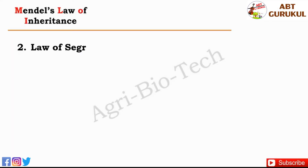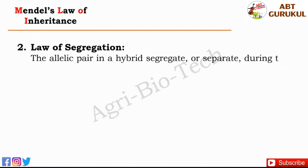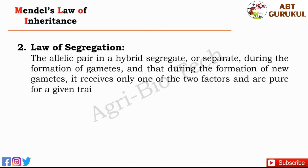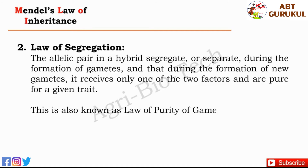Let's see the law of segregation. The law of segregation, or second law of inheritance, says that the allelic pair in a hybrid segregate or separate during gamete formation, and during the formation of new gametes, each gamete receives only one of the two factors and is pure for a given trait. Therefore, this is also known as the law of purity of gametes.